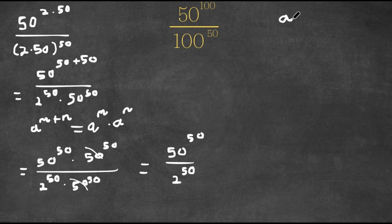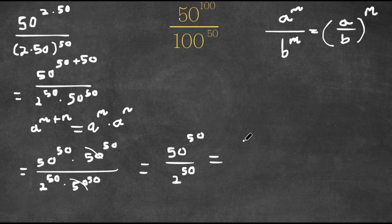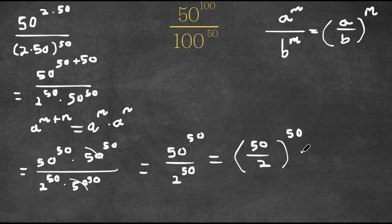Now, if we have something in the form a to the power of m over b to the power of m, this is equal to a over b to the power of m. So 50 to the power of 50 over 2 to the power of 50 is going to equal 50 over 2 to the power of 50. And 50 divided by 2 is 25, so we get 25 to the power of 50.